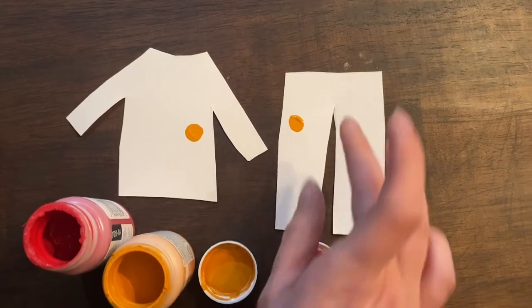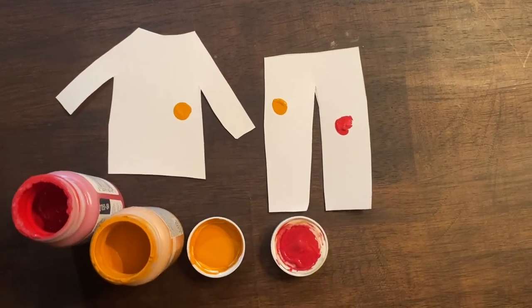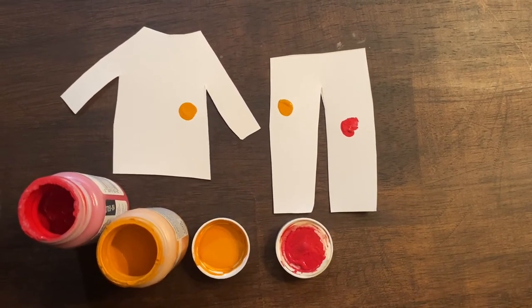Here we use some red. And you can just go ahead and stamp all over the shirt and the pants making a polka dot pattern.